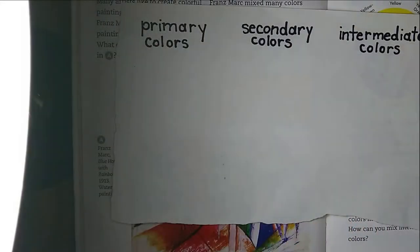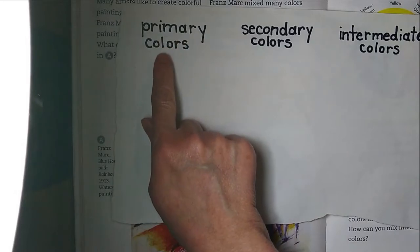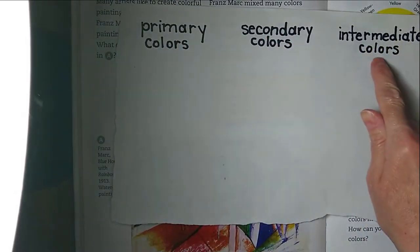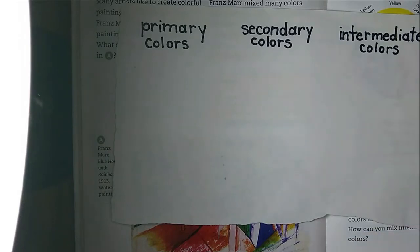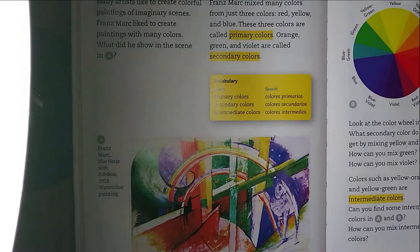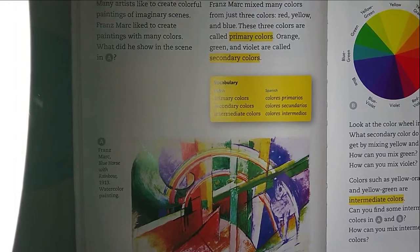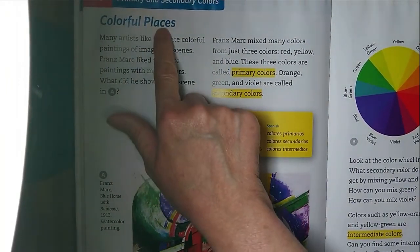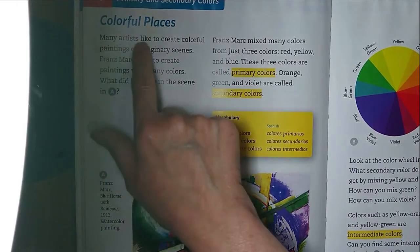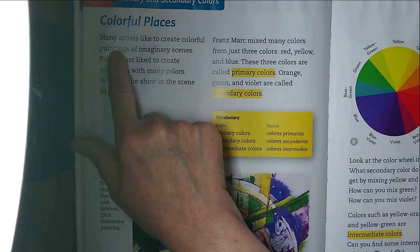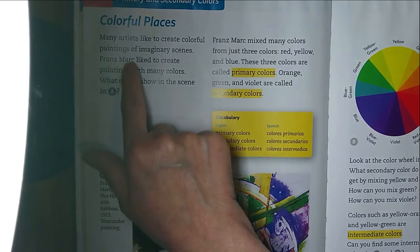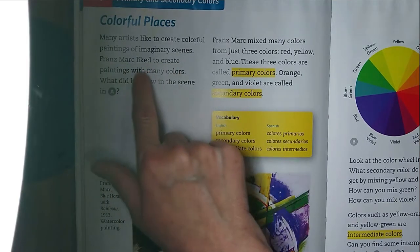Hi kids, today you're going to learn about primary colors, secondary colors, and intermediate colors. Let's read out of our book, Colorful Places. Many artists like to create colorful paintings of imaginary scenes. Franz Marc liked to create paintings with many colors.